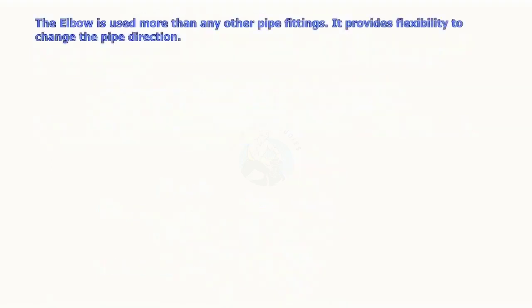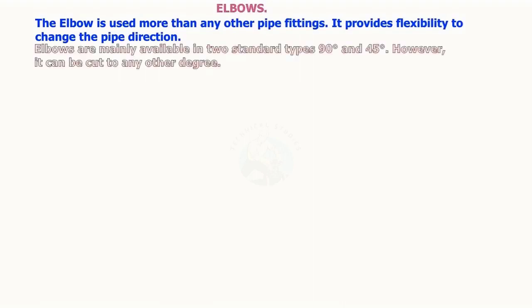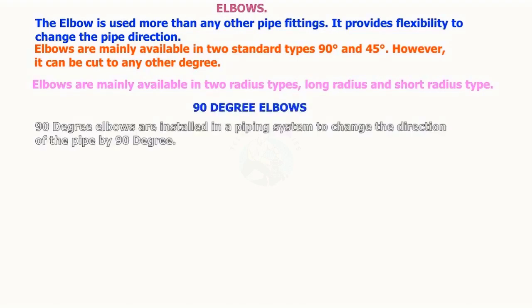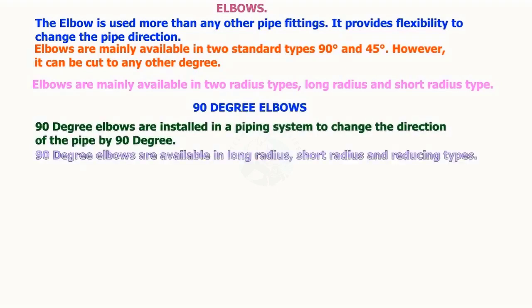The elbow is used more than any other pipe fitting. It provides flexibility to change the pipe direction. Elbows are mainly available in two standard types: 90 degrees and 45 degrees. However, it can be cut to any other degree. Elbows are mainly available in two radius types: long radius and short radius type. 90-degree elbows are installed in a piping system to change the direction of the pipe by 90 degrees, and are available in long radius, short radius, and reducing types.